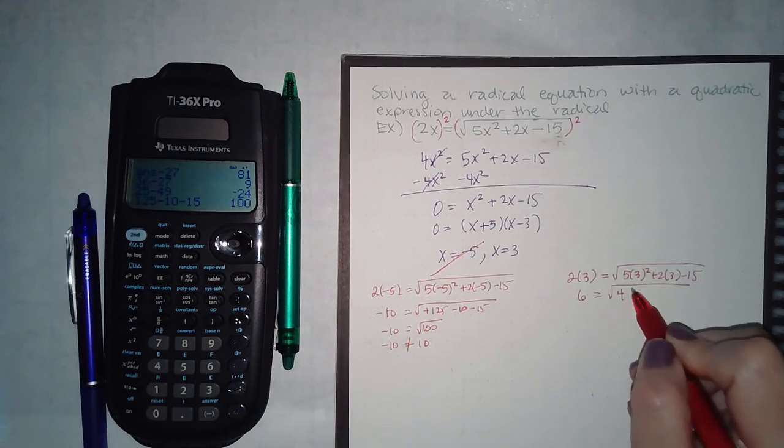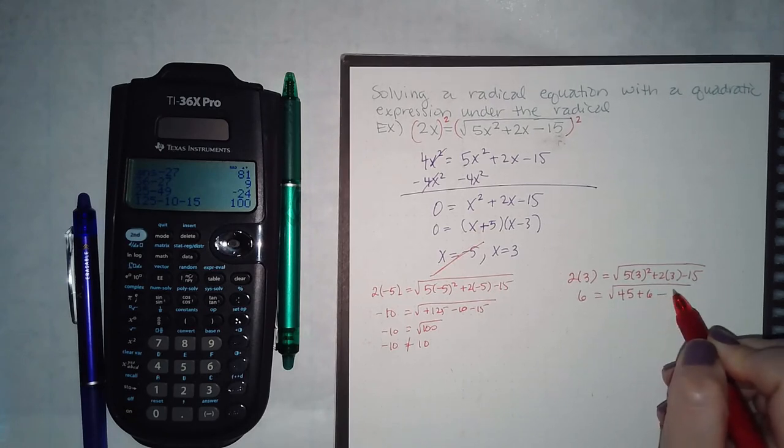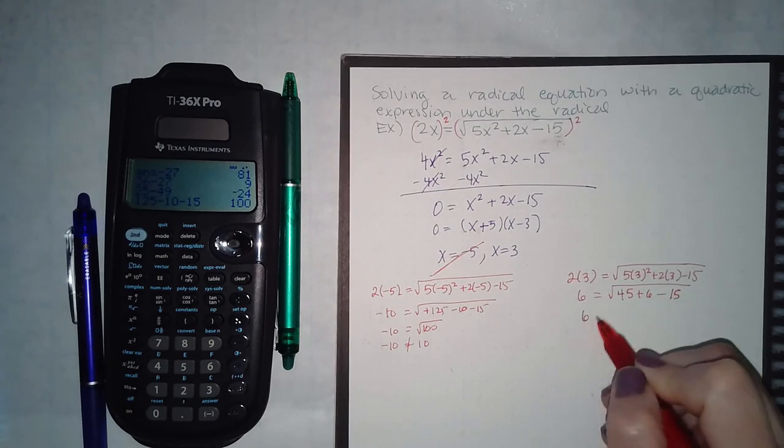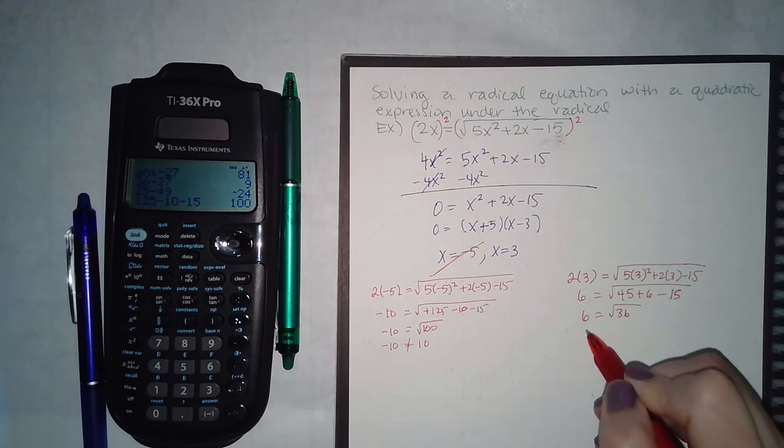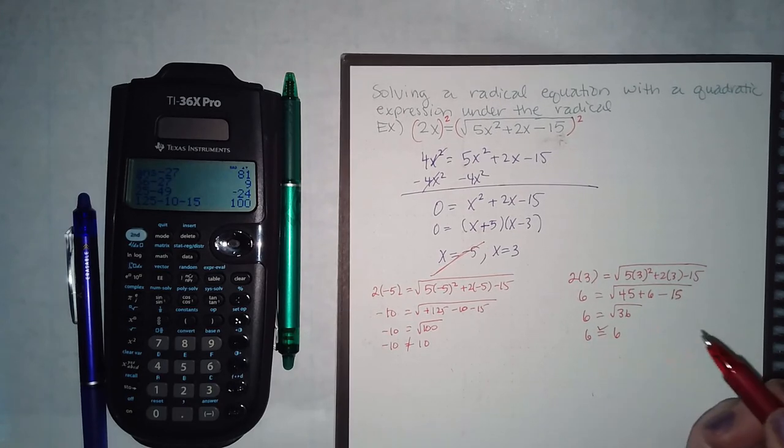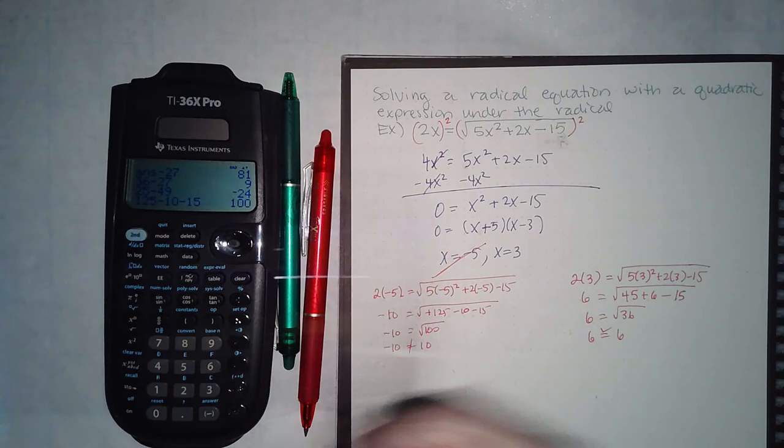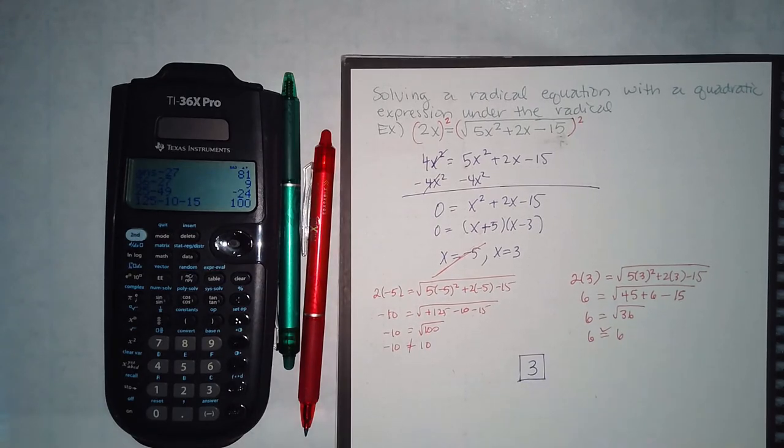Let's plug in the 3 now. 9 times 5 is 45 plus 6 minus 15 is 36, and that's a positive 6, and these do equivalent. So there's only one answer and that answer is 3 here.